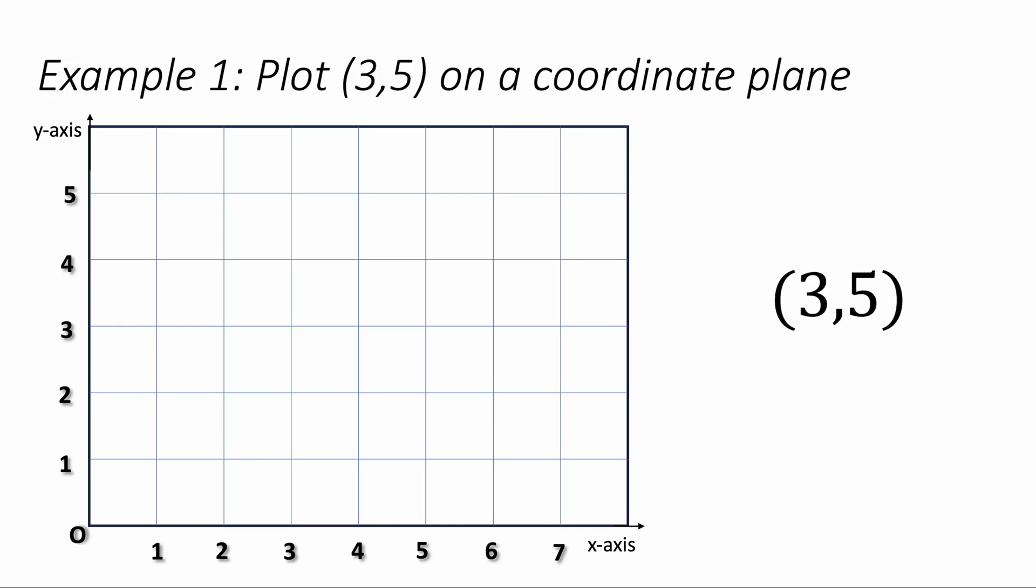So this point is 3, 5. The 3 represents the x and the 5 represents the y. That's 3 across and 5 up. And that is the coordinate 3, 5 there.